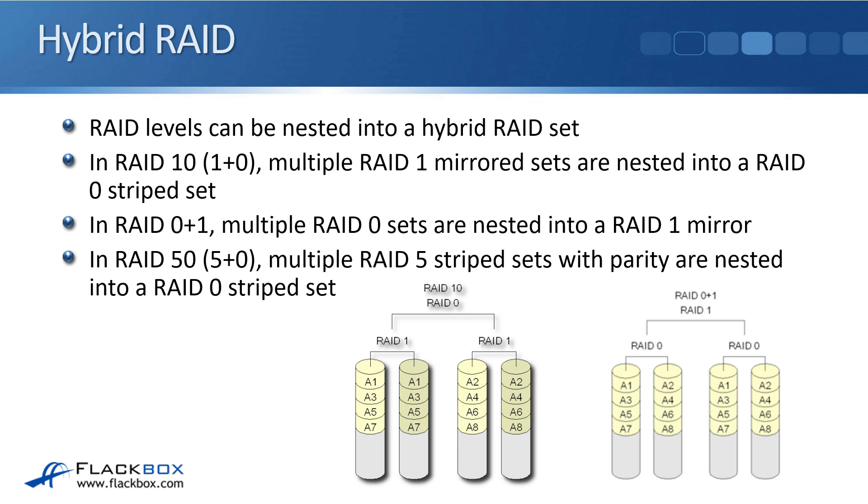And with RAID 50, that's 5 plus 0, multiple RAID 5 stripe sets with parity are nested into a RAID 0 stripe set.